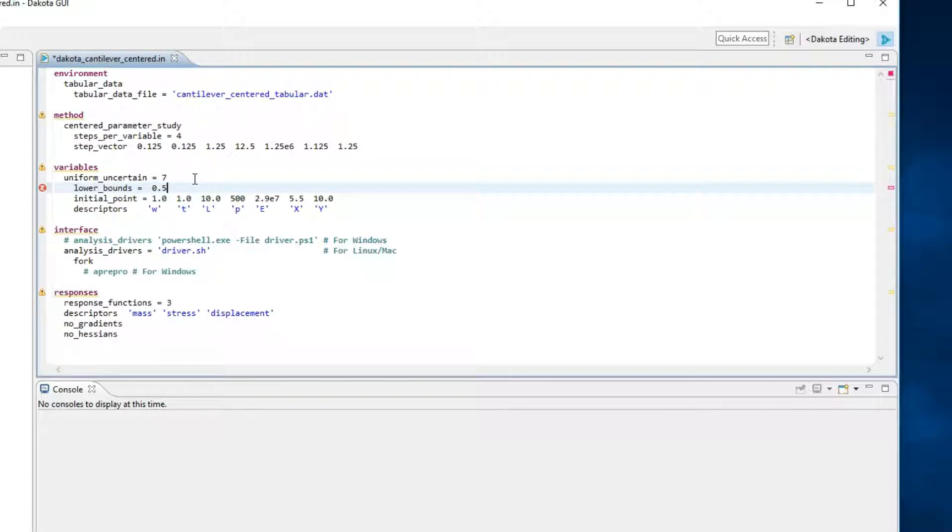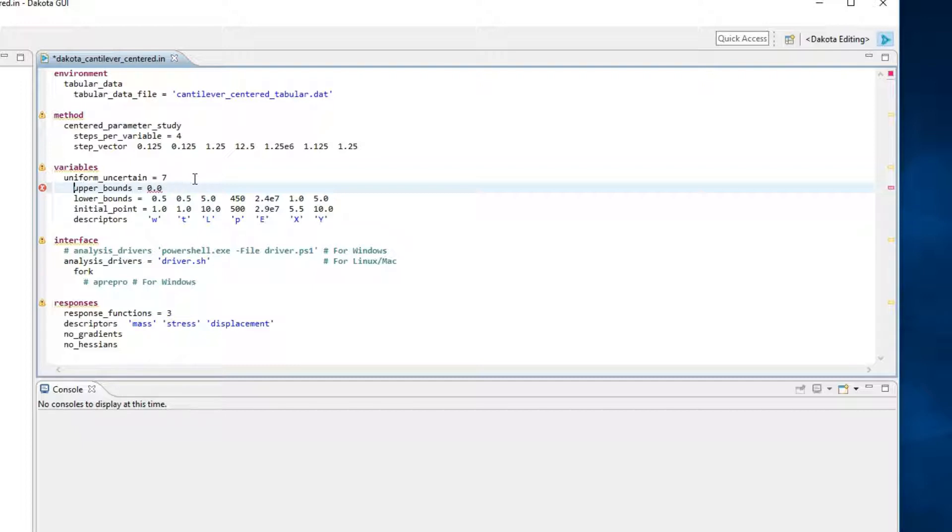For keywords such as these, Dakota stores numerical values in space-separated lists. The indices of these lists need to correspond to the indices of your variable descriptors. For instance, the first occurrence of 0.5 after lower_bounds corresponds to the lower bound of the variable w, which is in the first index of the descriptors list. The second occurrence of 0.5 corresponds to the lower bound of the variable t, which is the second variable in the descriptor list, and so on. Let's fill out lower and upper bound values for all of our uniform uncertain variables.